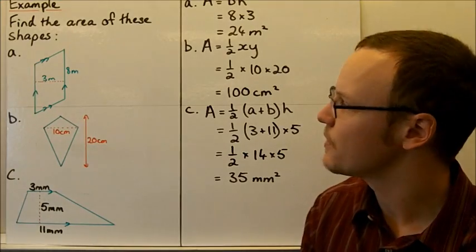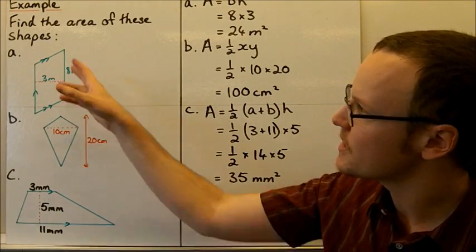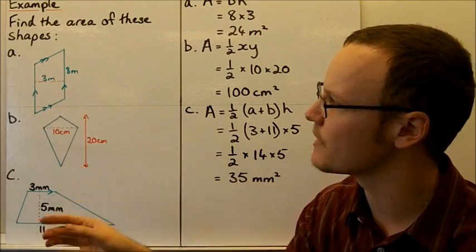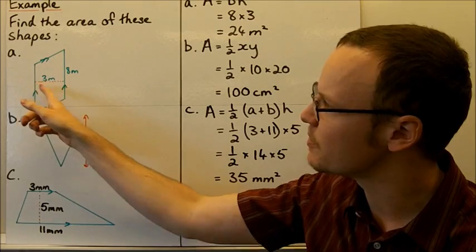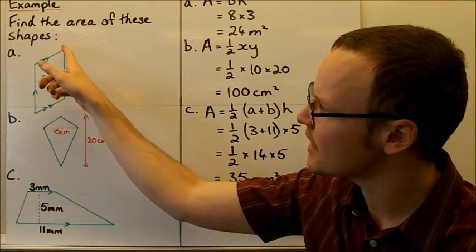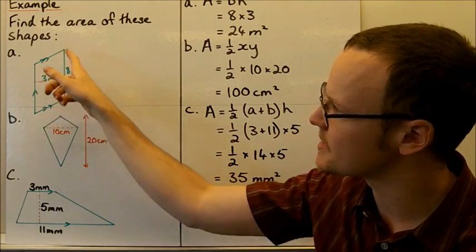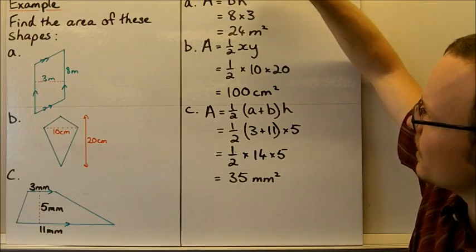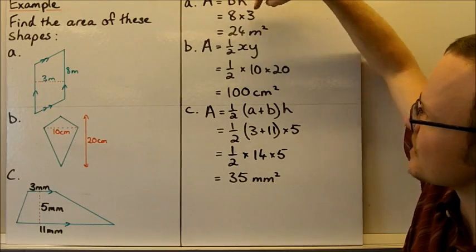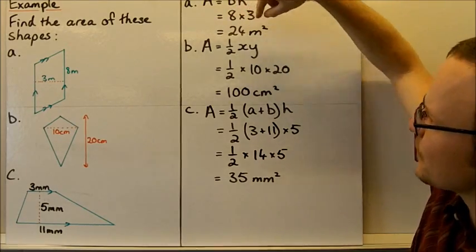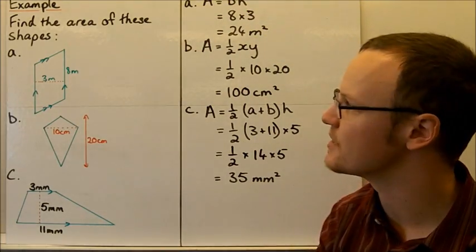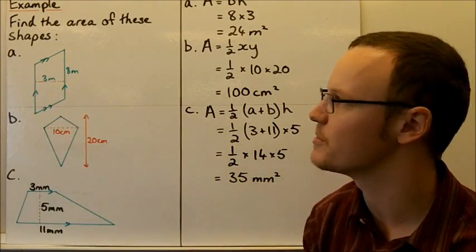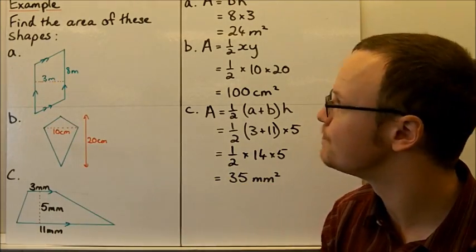Here are a few examples to look at, finding the area of these shapes. Here we've got a parallelogram. The perpendicular height is 3 metres and the length of the base is 8 metres. So area is base times height, which is 8 times 3, which is 24 square metres. 24 square metres is the area of that parallelogram.